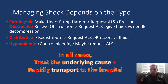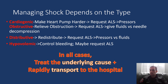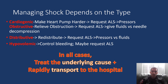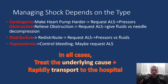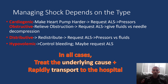In distributive shock, if the blood vessels are inappropriately dilated, we need to squeeze them down — ALS can provide a vasopressor. For anaphylactic shock specifically, you have EpiPens and can start treatment right away. For septic or neurogenic shock, the EpiPen concentration isn't appropriate; you'll want an ALS intercept. Fluids can also help distributive shock by filling up the tank even when vessels are dilated.